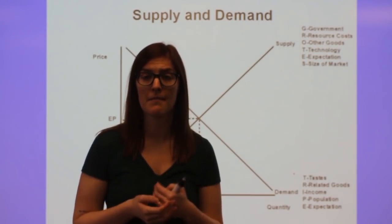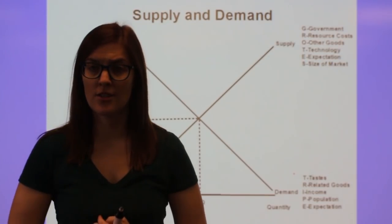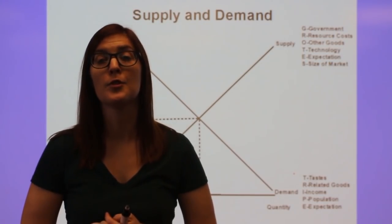P is population, more people, more demand. And E is future expectations. You behave today based on the expected future price change.